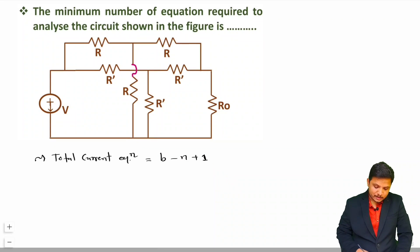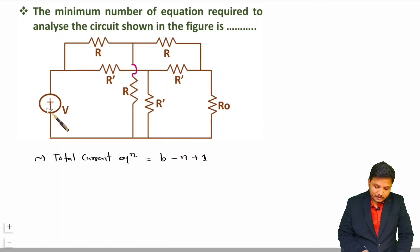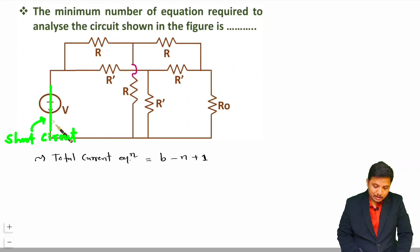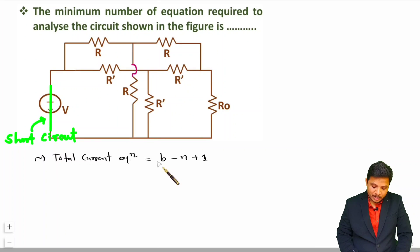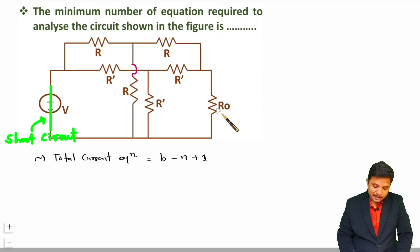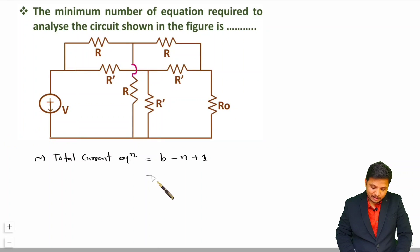Here, voltage sources should be short-circuited, so you do not need to consider the voltage source when solving the graph. The total number of elements gives the total number of branches, which is 7 branches in this circuit.